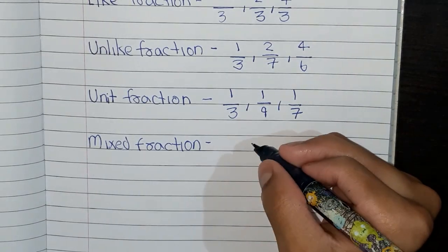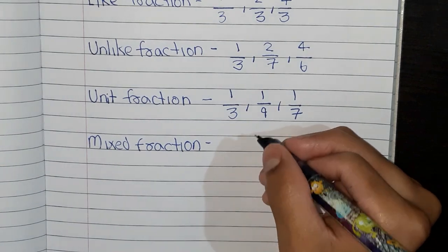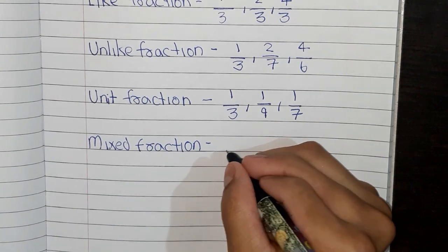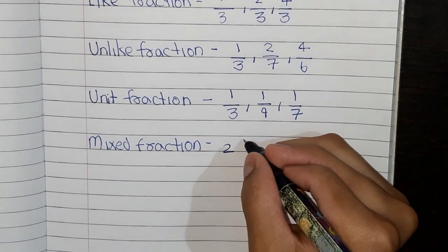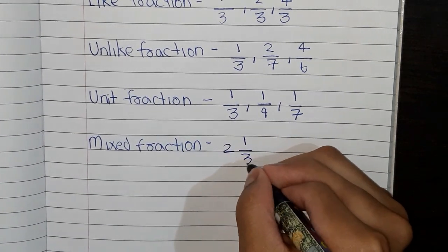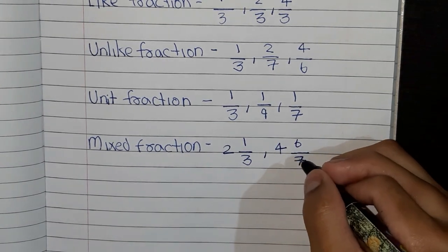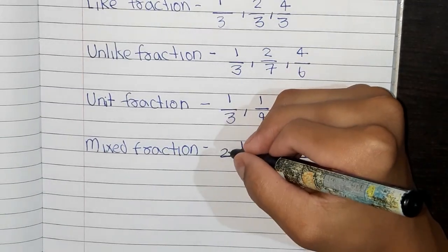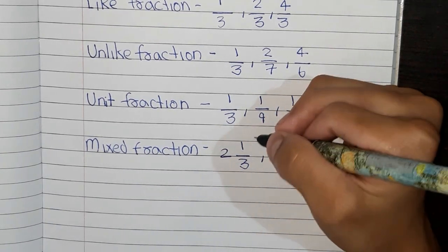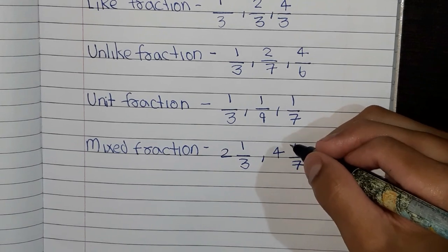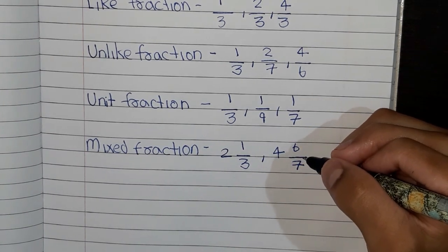A fraction which has a whole number and a proper fraction is called as mixed fraction. For example, 2 and 1 by 3, or 4 and 6 by 7. So here 2 is a whole number and 1 by 3 is a proper fraction. Here also 4 is the whole number and 6 by 7 is a proper fraction.